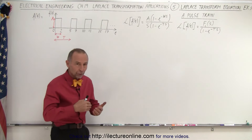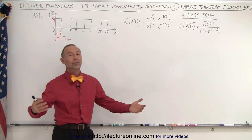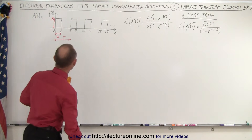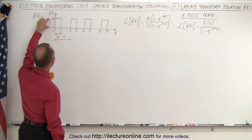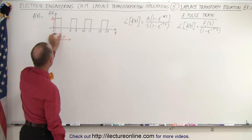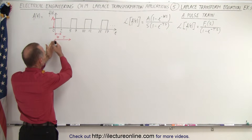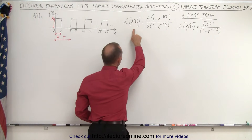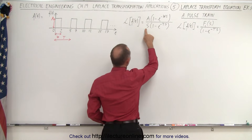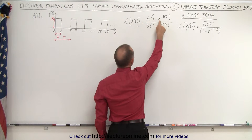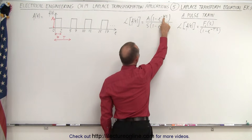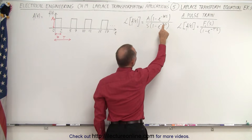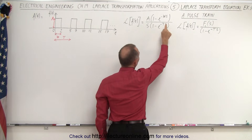We have a pulse input — maybe a voltage input — and we need to find the current in the circuit based upon this kind of voltage input. A pulse train is defined by the amplitude of the pulses, the width of the pulses, and the period between the pulses. The general format of the Laplace transform is equal to the amplitude over s, times the quantity 1 minus e to the minus (width times s), divided by 1 minus e to the minus (period times s).